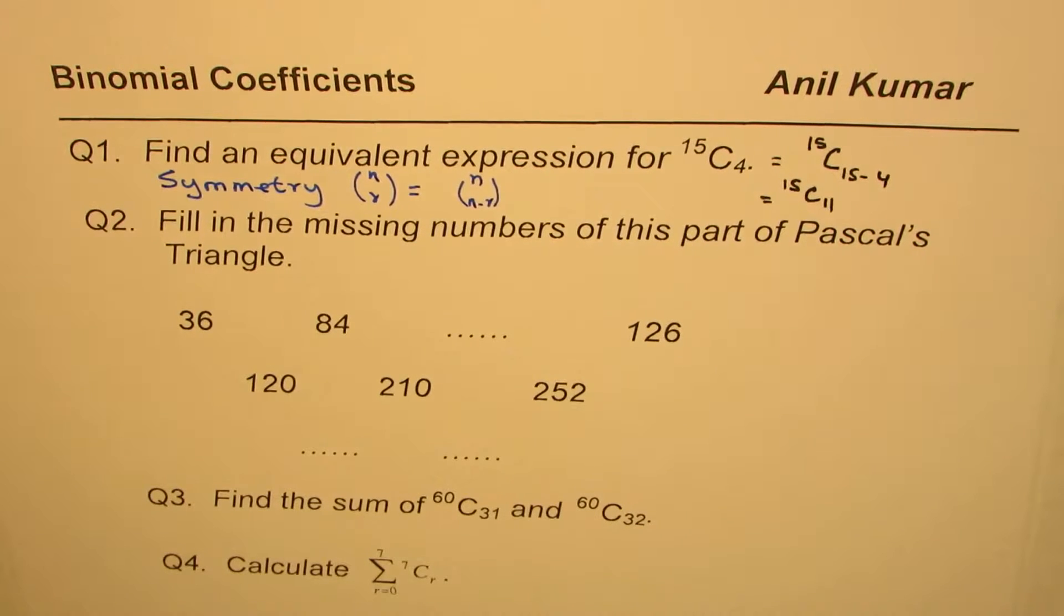Question number two is fill in the blanks, and here we are given some part of Pascal's triangle. So here we are using the second property, which is sum of two consecutive entries.